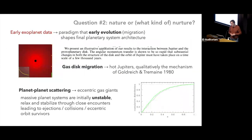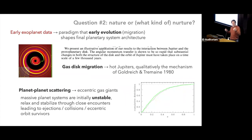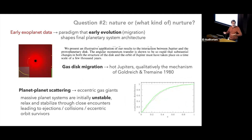Let me turn more briefly to a second open question: what determines the final architecture of a planetary system? Is it controlled when the system first forms — a few million years — or does it continue to evolve much longer? When exoplanets were first discovered, the first one was a Jupiter-type planet in a few-day orbit — a so-called hot Jupiter. The immediate interpretation was that it couldn't have formed there; it formed further out and then migrated inward by interacting with the gas disk. Work dating back to 1980 discussed exactly how a planet might lose angular momentum to its disk and move toward the star on a relatively short timescale.